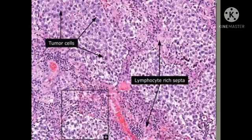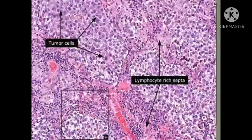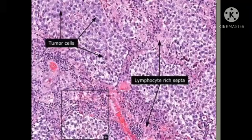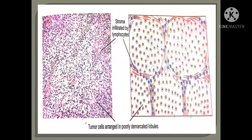You can appreciate the tumor cells highlighted here with three black arrows — they are in the center. Surrounding the tumor cells there is a lymphocyte-rich septa. There are lymphocytes which are deep blue in color, separating the tumor cells into lobules. On the right side, you can appreciate the tumor cells arranged in poorly demarcated lobules, with the septa containing deep blue lymphocytes. This is the classic description for microscopy of seminoma — the tumor cells separated by lymphocytes.